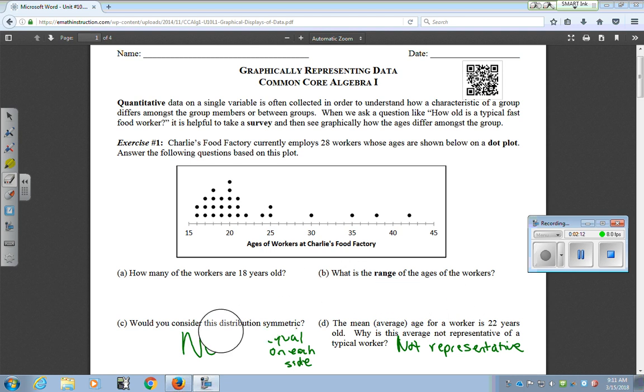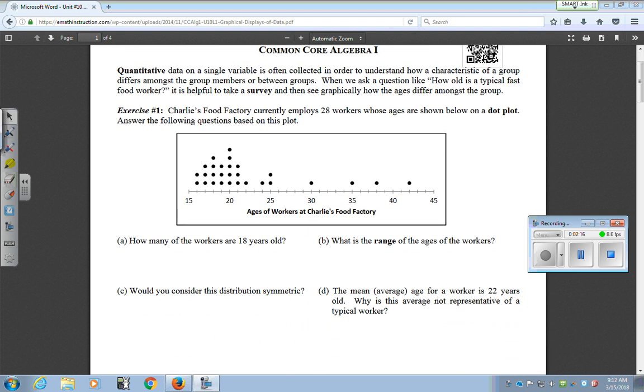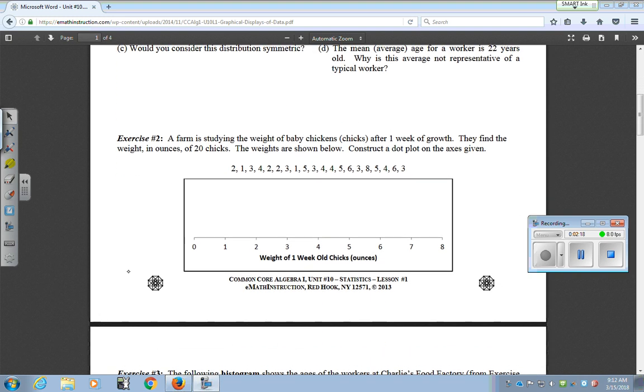Now we're going to move on to the next example. With exercise two, you're just going to fill in the dot plot yourself. So I'd recommend as you do this, look for the lowest numbers, look for anyone's at zero. We don't have anyone at zero. If you look at one, put a little check underneath the one, and then fill in a dot above it. Work your way through that example. This would be a good time to pause the video and do exercise two, then come back when you're finished.